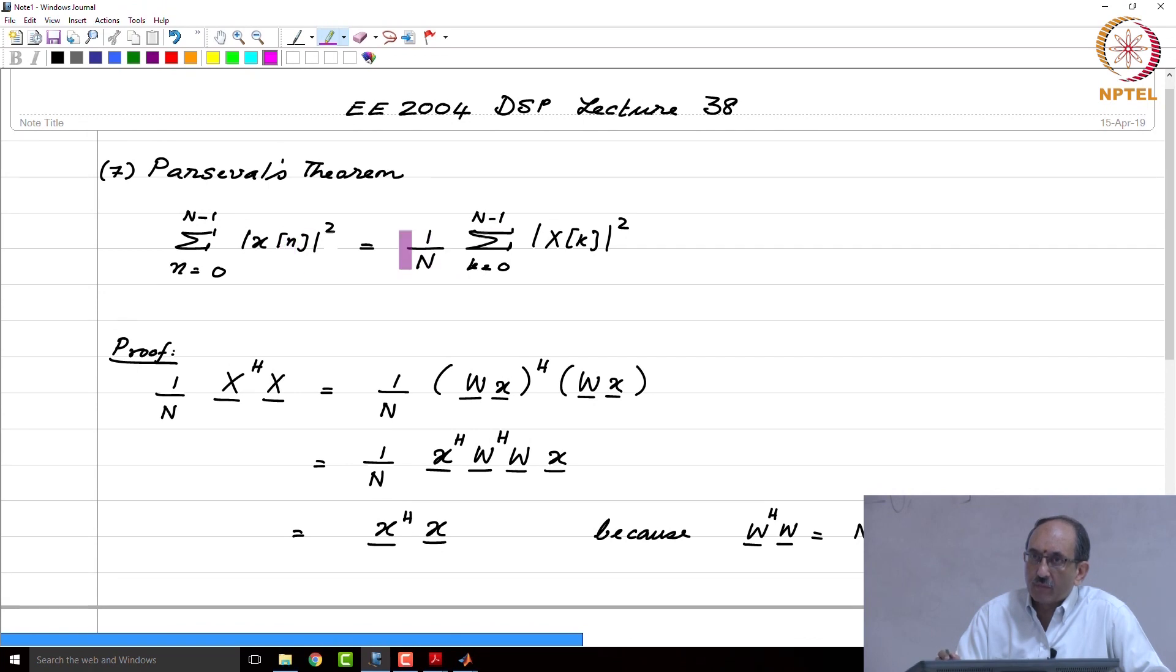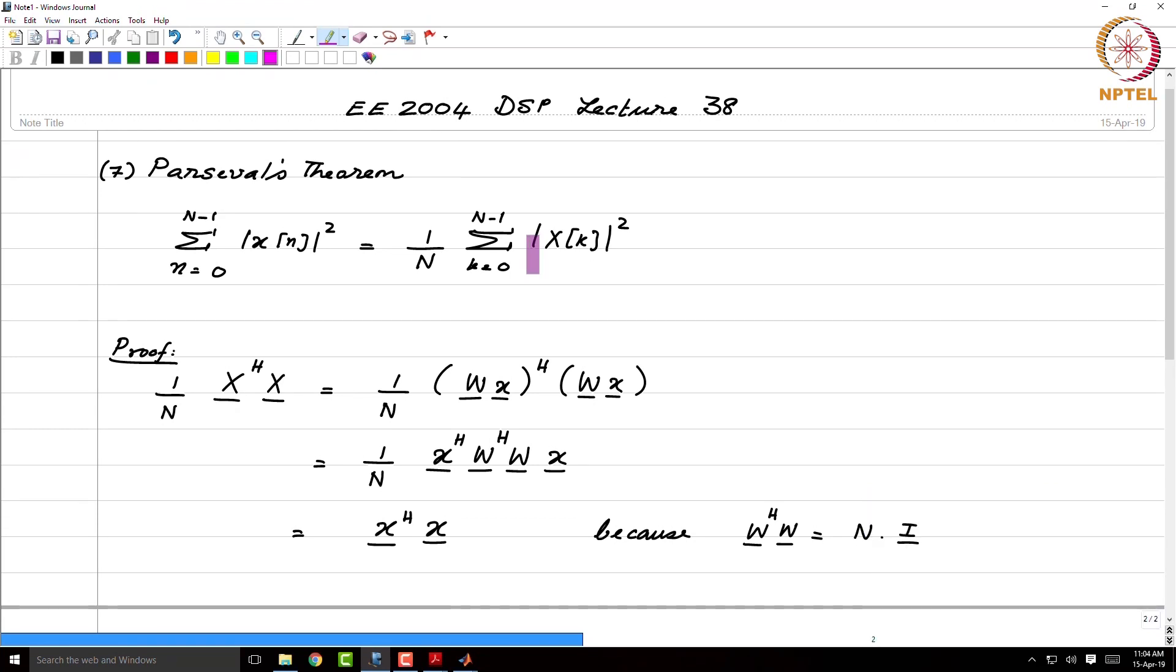So the norm in the time domain will exactly be equal to the norm in the frequency domain. And if you redefine your DFT matrix like that, then W Hermitian W will just be I.